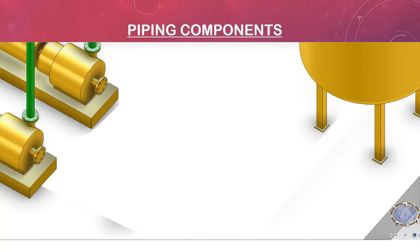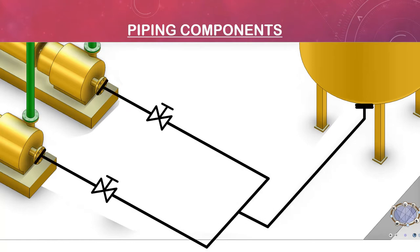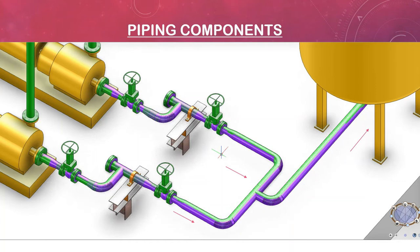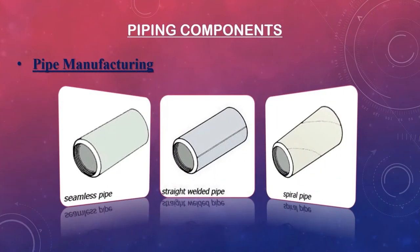Piping components are mechanical elements that, when joined or assembled, form a pressure-tight fluid-containing stream. Components include pipe fittings, flanges, gaskets, bolting, and valves. The first system component we shall review is pipe. Pipe is manufactured by one of three processes: seamless, seam welding, or spiral welding. The manufacturing process selection depends on pipe size, wall thickness, quality requirements, and client specifications.